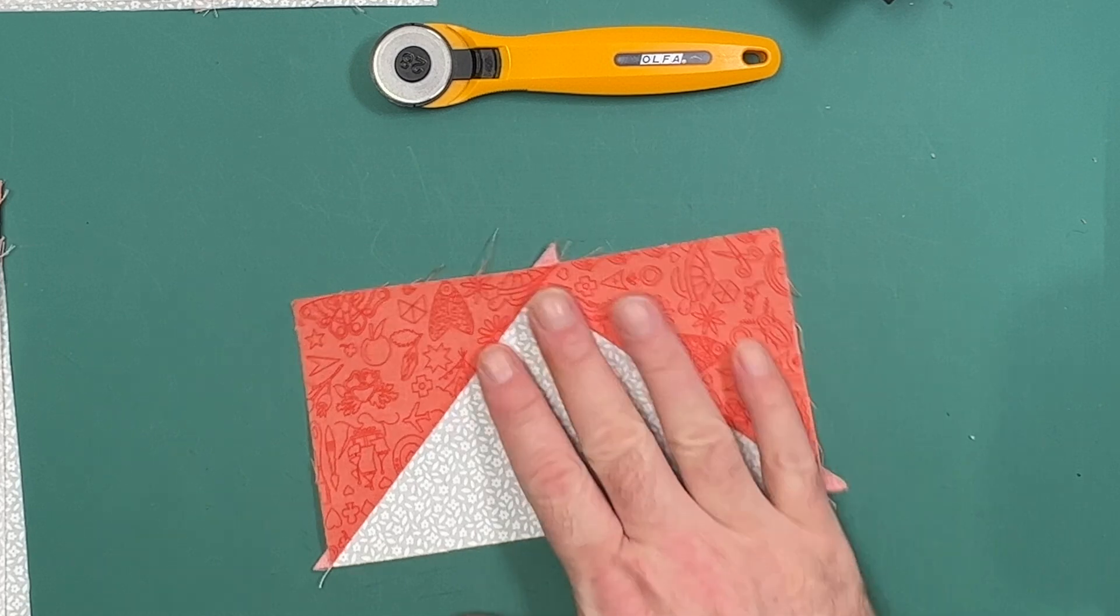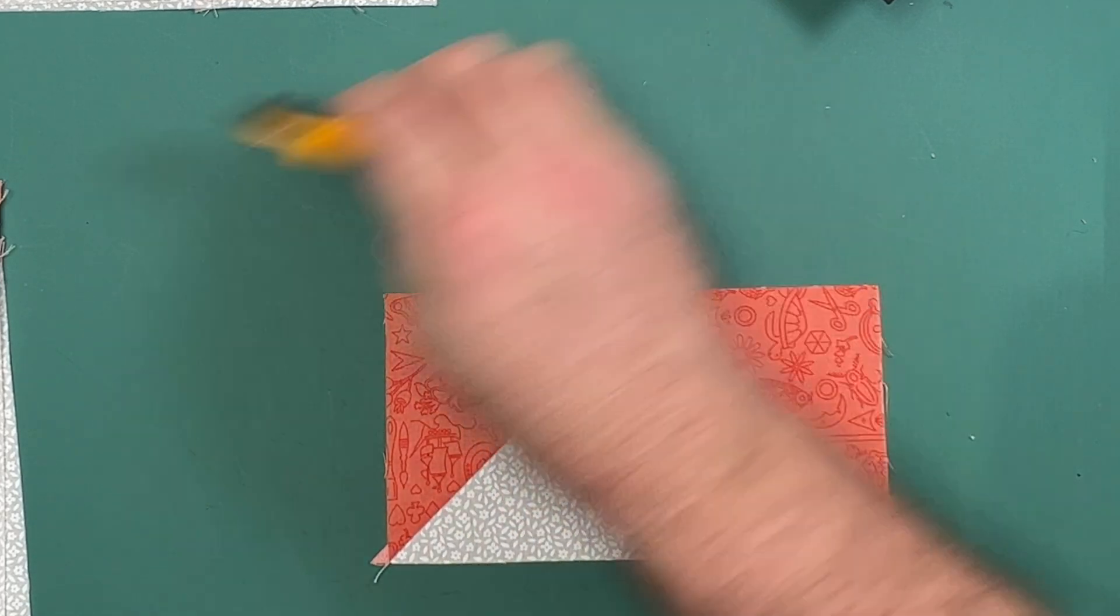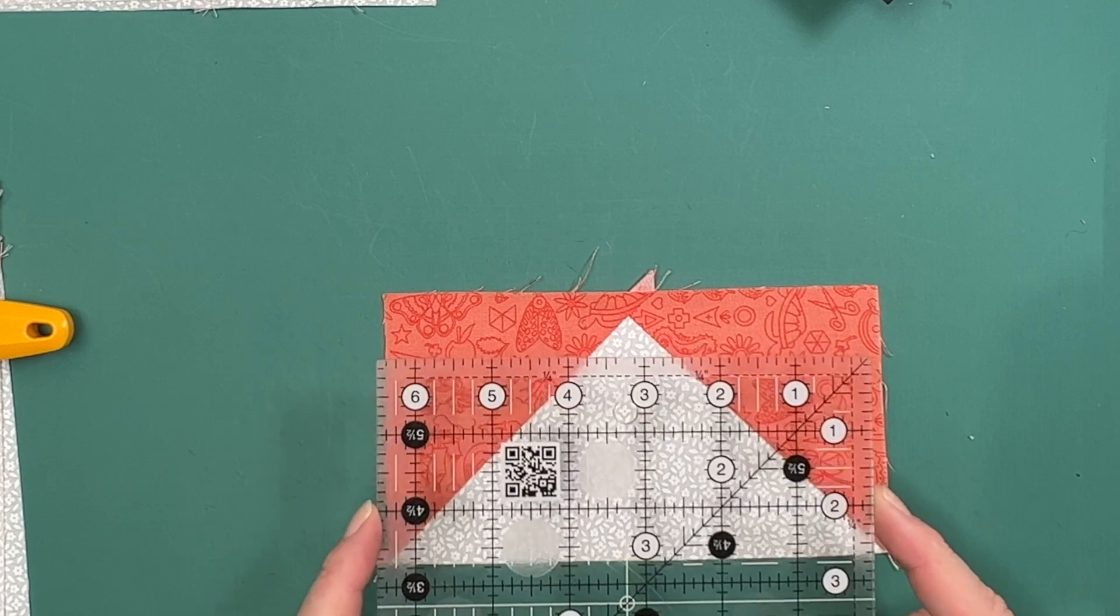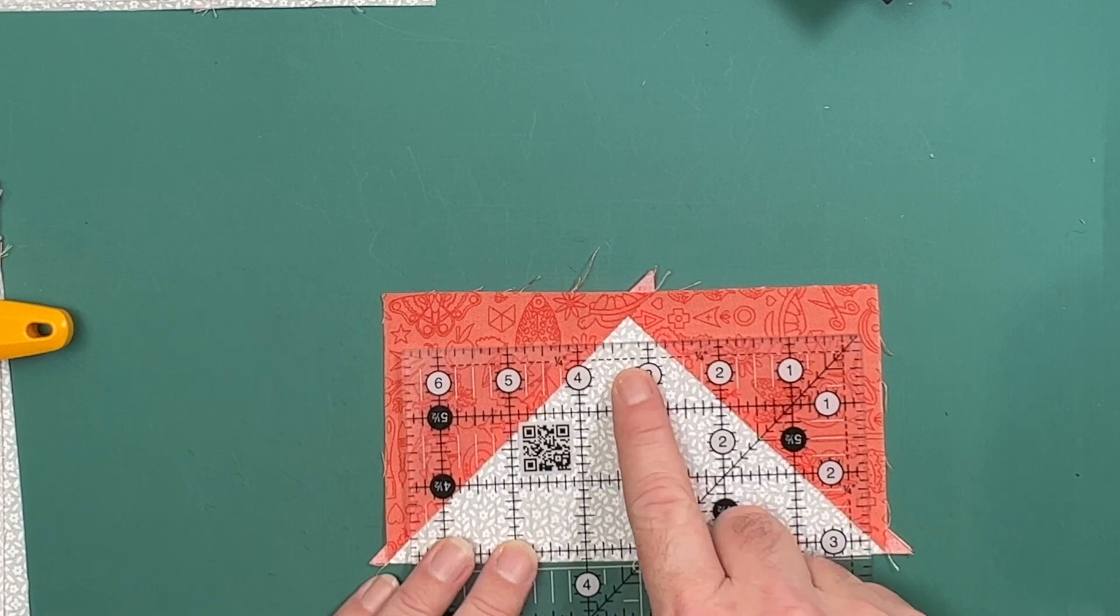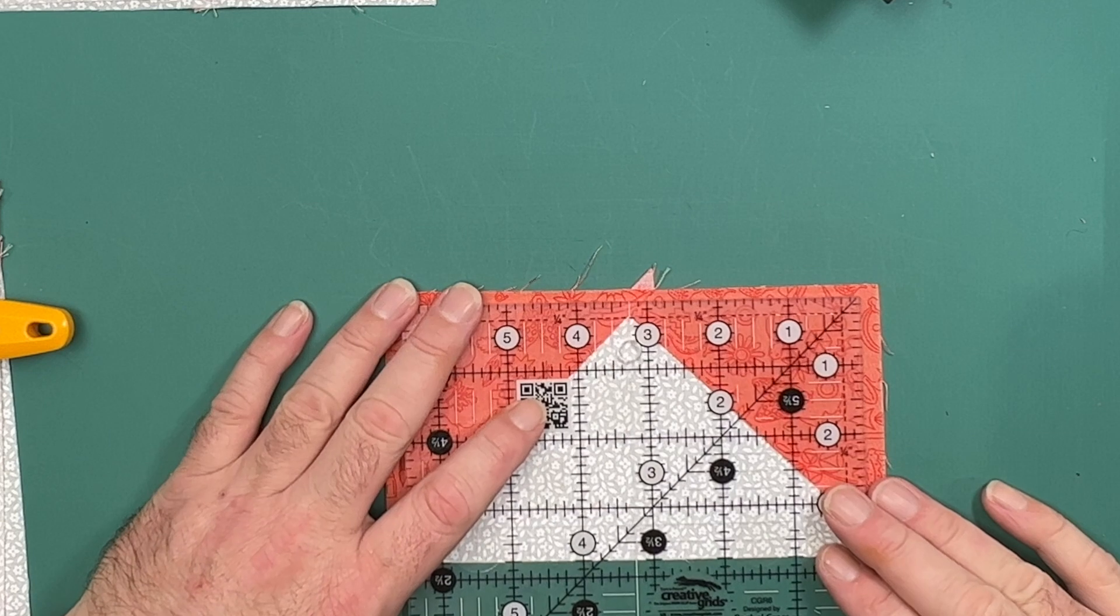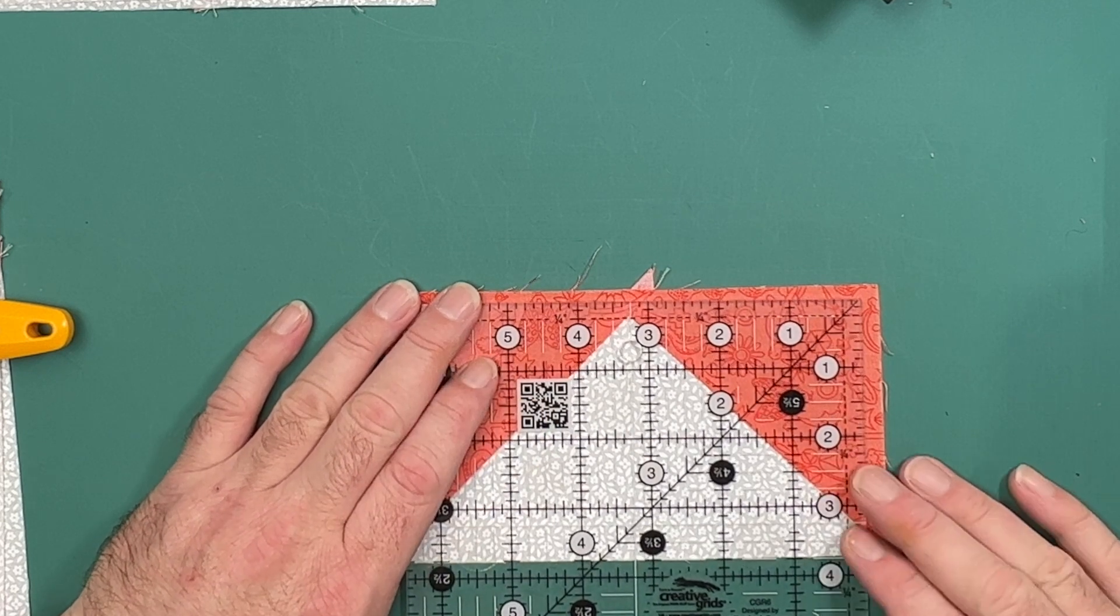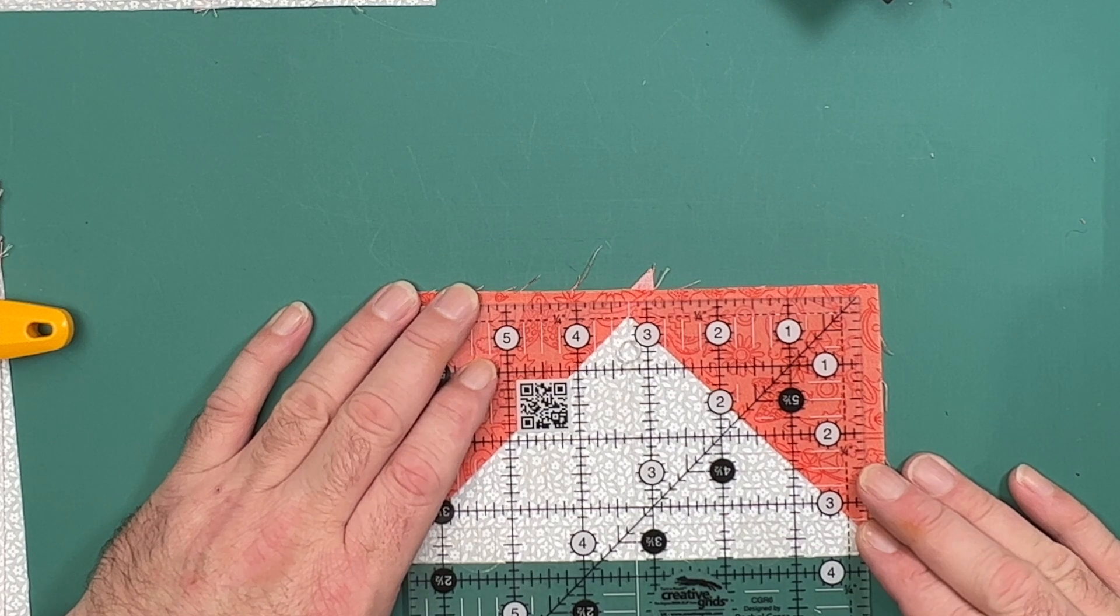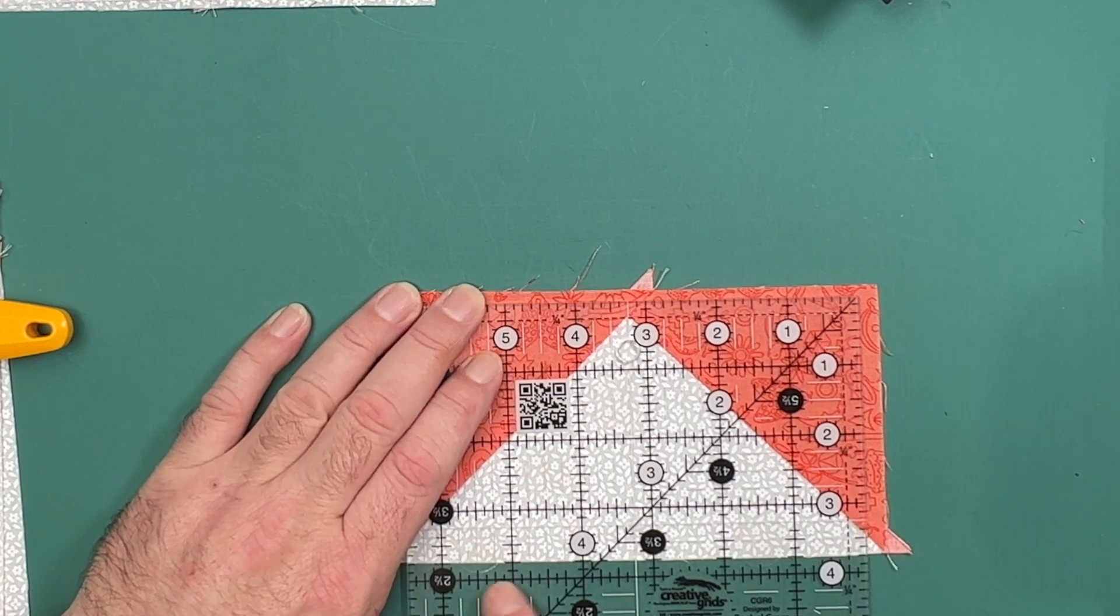If you do not own the ultimate flying geese tool, you can do this with a regular quilting ruler. As is always my preference, I have my six and a half inch square here. Our unfinished size for these flying geese is three and a half by six and a half, so we need to line up that three and a quarter mark, which is half of our six and a half, in the center of our peak.